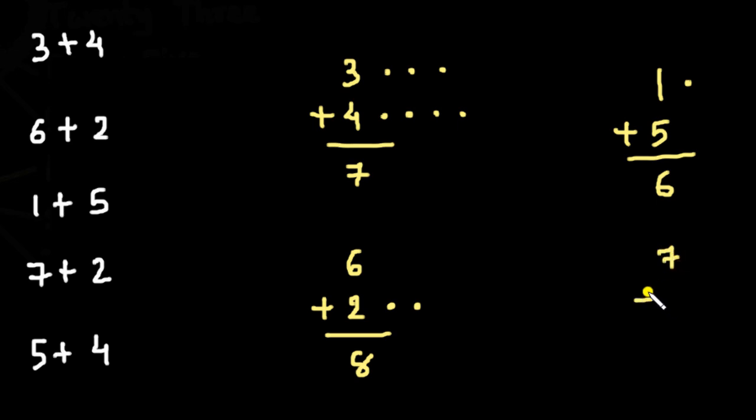Next, 7 plus 2. Here we have 7. For 2, I'm putting 2 dots here. So what are the 2 numbers after 7? They are 8 and 9. So 7, 8, 9. The answer is 9.